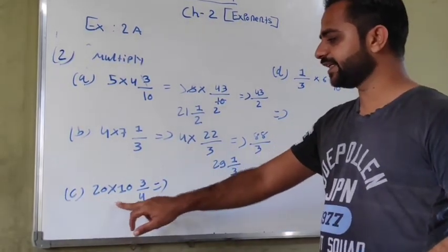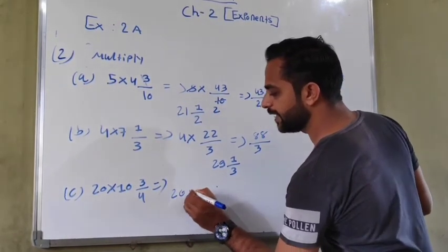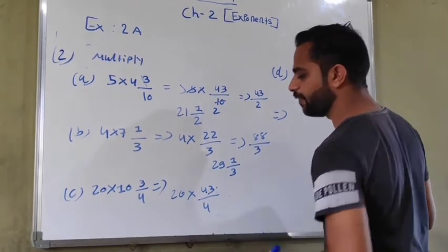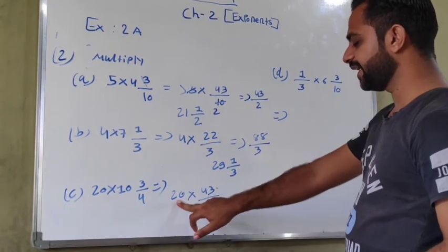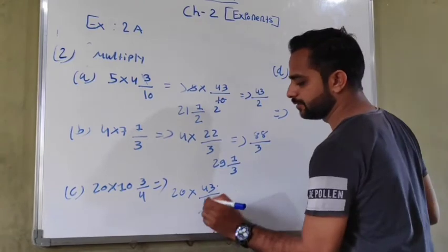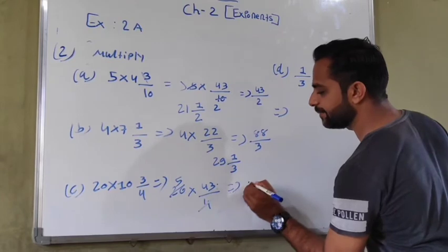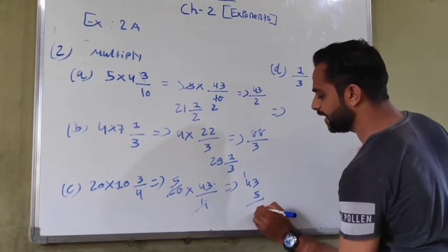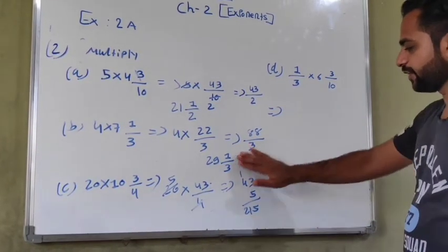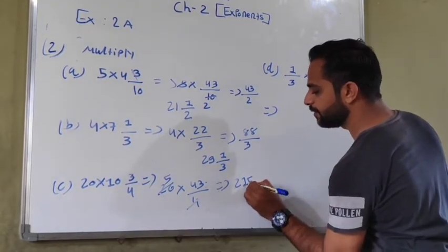Now we solve next: 20 multiplied by 10 and 3 upon 4. 20 multiplied by 10 is 200 plus 3 is 203 upon 4. Here 4 divides into 20 five times. Simplifying gives us 203 upon 4. The answer is 215.